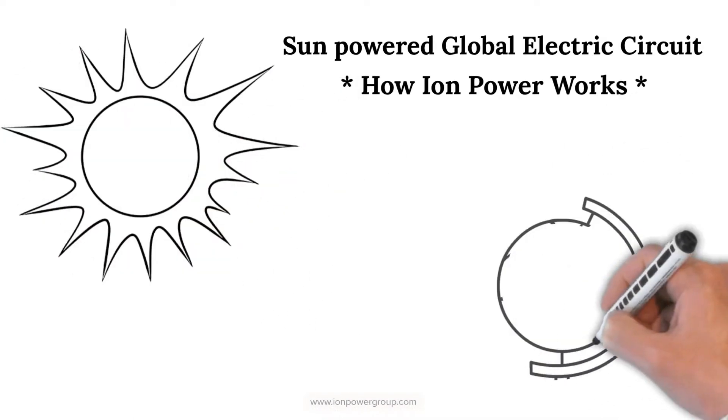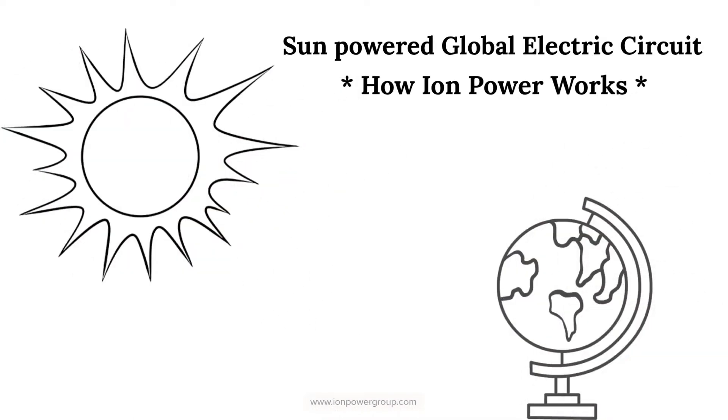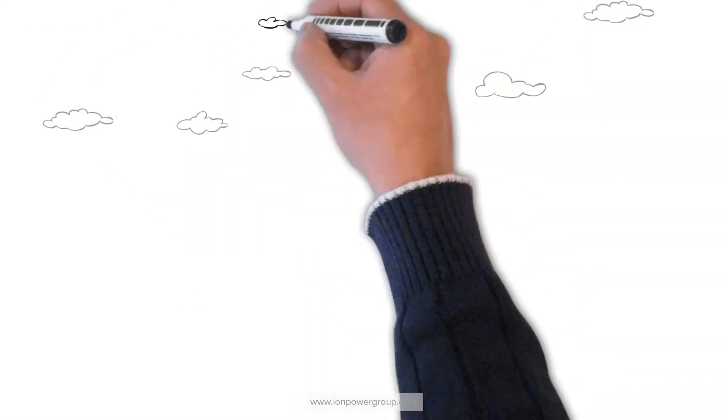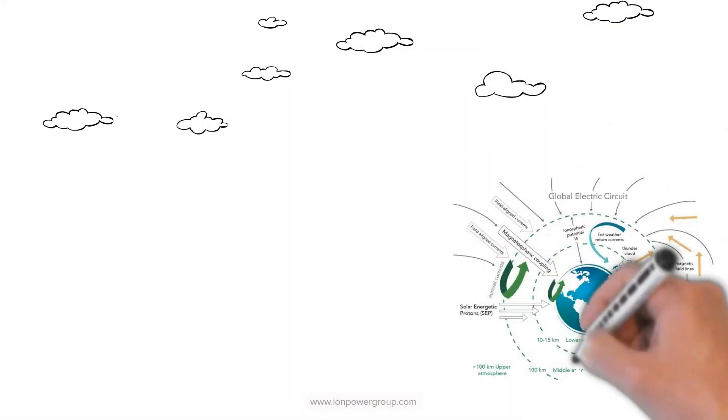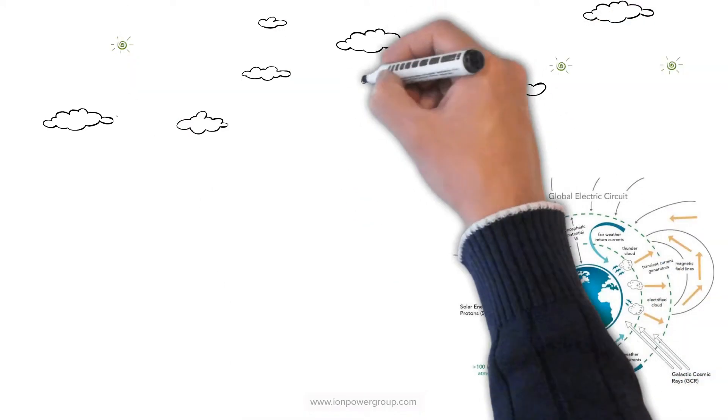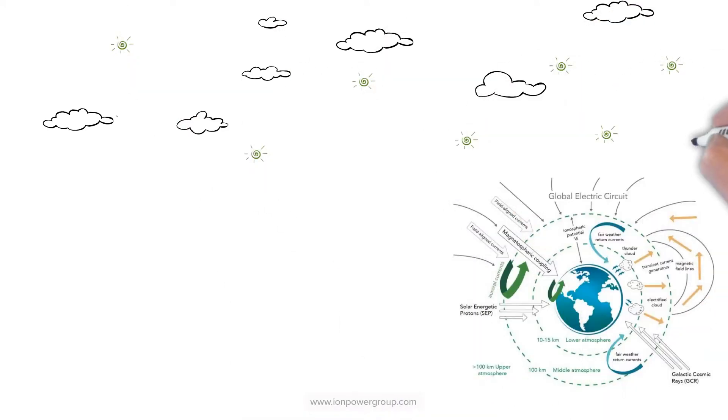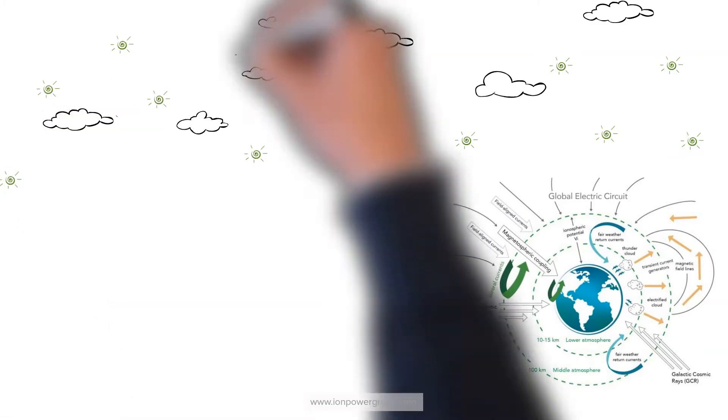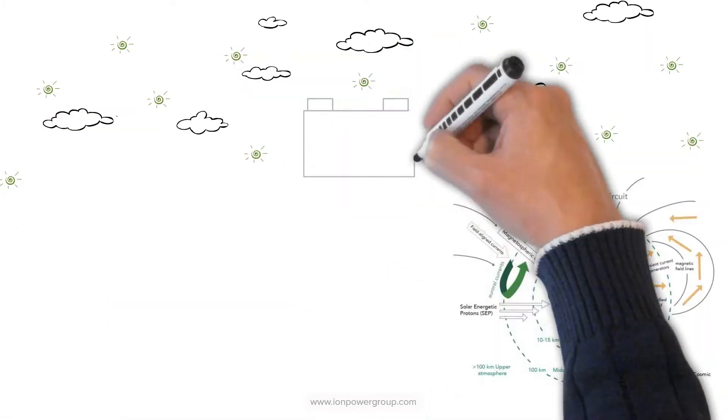The Sun bombards the Earth with quadrillions of watts of continuous energy. The Sun's energy powers the Earth's global electric circuit that manifests trillions of ions throughout the atmosphere, making it a natural source of clean electricity.